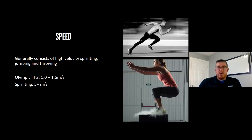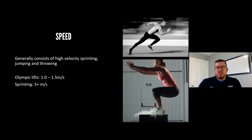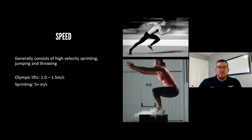Finally, the speed range on the force-velocity curve consists of high-velocity sprinting, jumping, and throwing. Olympic lifts for speed-strength are generally performed between 1.0 and 1.5 meters per second. For comparison, if you run 10 meters in two seconds, you're moving at 5 meters per second. Sprinting is the fastest movement you can perform, so it's important to include in programs — and high-velocity sprinting is critical for injury prevention.